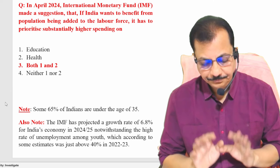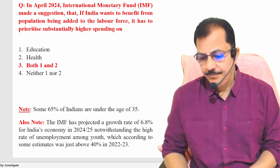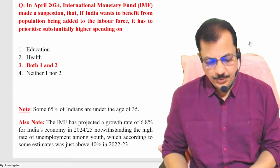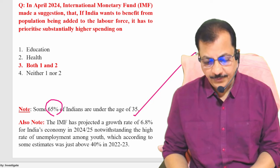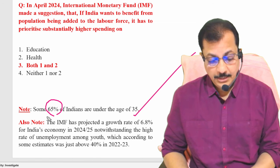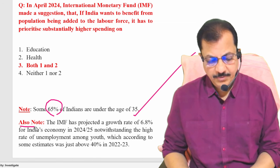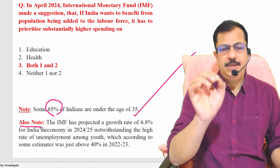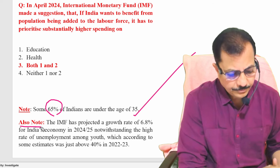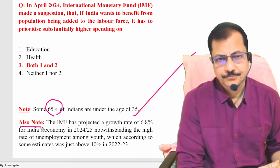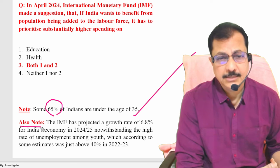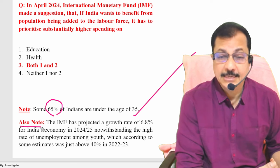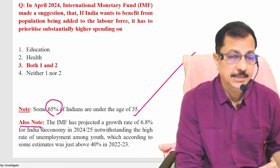Important note: 65 percent of Indians are under the age of 35. UNCTAD has projected India's economic growth at 6.5 percent for the year 2024. This is important — if asked in the examination what the projected economic growth rate by UNCTAD is, your answer should be 6.5 percent.